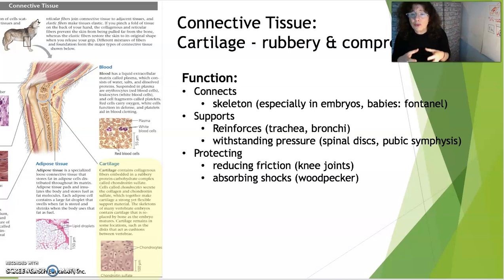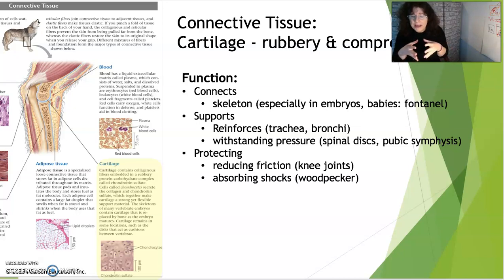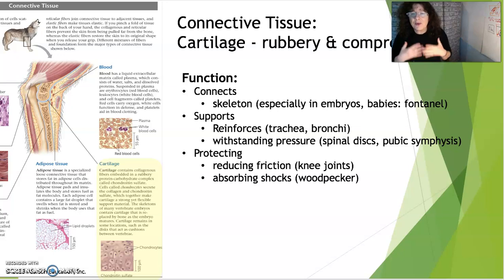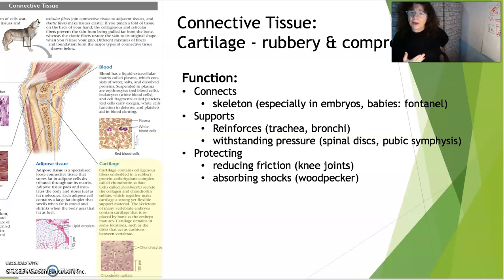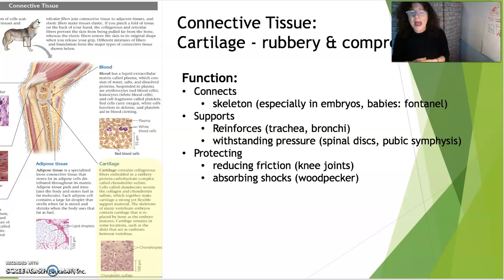Cartilage is a rubbery, compressible, and highly functional tissue that can be compressed and also protective at the same time. In adult vertebrates, it reinforces the trachea and bronchi of the respiratory system. It also withstands pressure in the spinal column, and in women, the pubic symphysis can compress and expand during birth, protecting the body from shocks — especially around the knee joints.